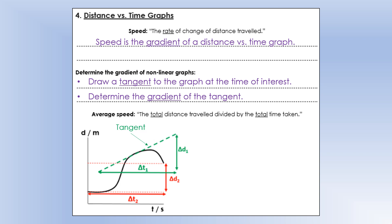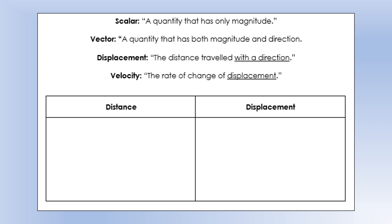On the graph, the tangent gives us the instantaneous speed at a point — we calculate its gradient as delta d1 over delta t1. To find average speed, we use the total distance traveled, delta d2, divided by the total time taken. Average speed doesn't care what happened in between those two points; it's just an indication of what happened on average over that period of time. These are subtly different things.